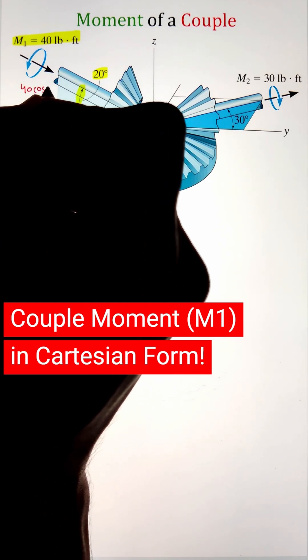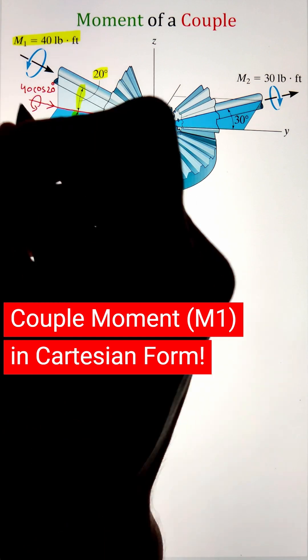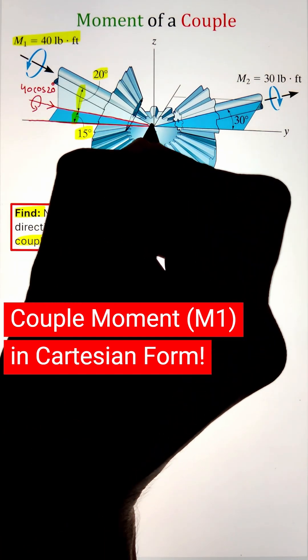M1 is making an angle of 20 degrees with respect to our x-y plane. So taking the cos 20 function will project it along the x-y plane.